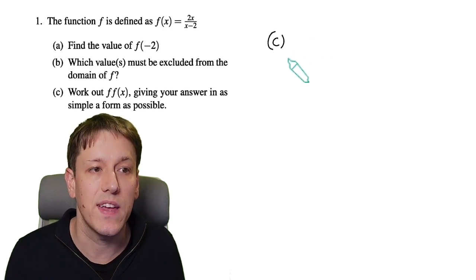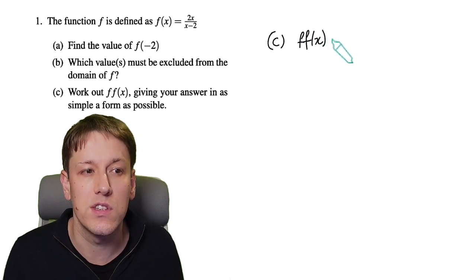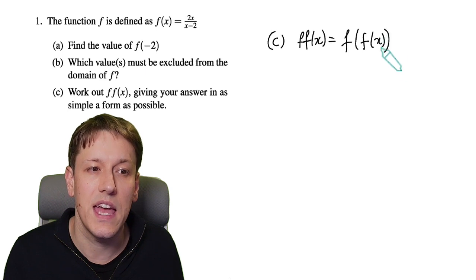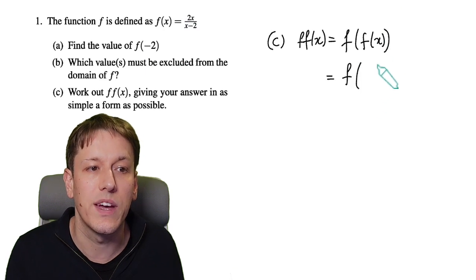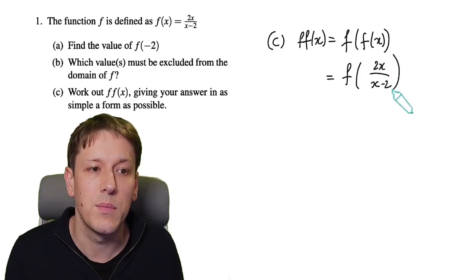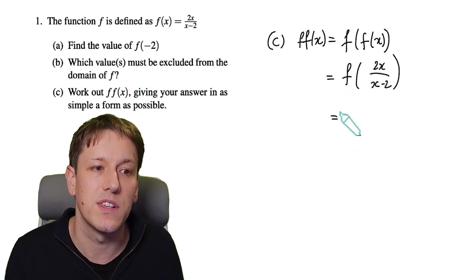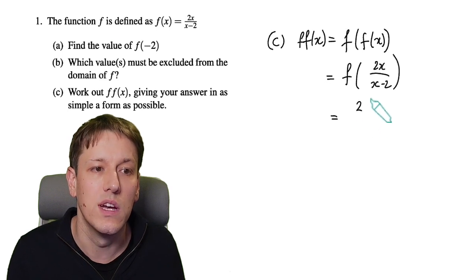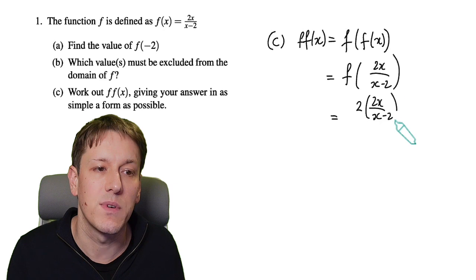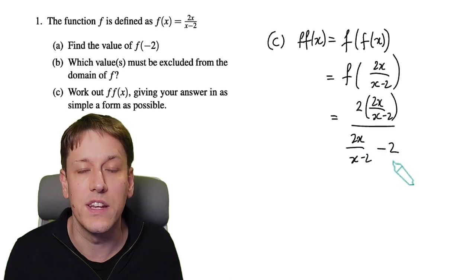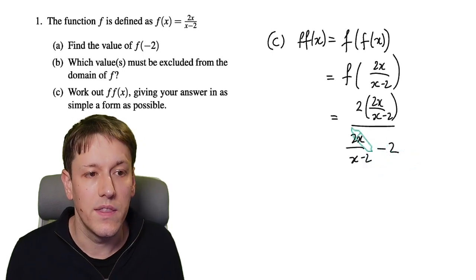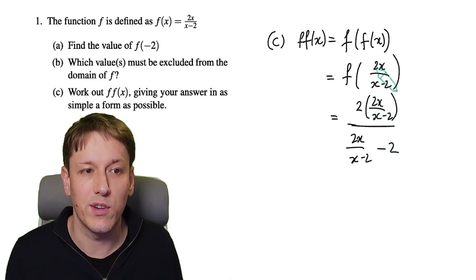In part c we want to work out f(f(x)), simplifying our answer as much as possible. f(f(x)) is a composition of functions — that means do f of (f(x)). So I'm taking the whole of f(x), which is 2x / (x - 2), and putting that as the input to this function. I'm going to replace x with 2x/(x-2) everywhere, giving 2 × (2x/(x-2)) divided by (2x/(x-2)) - 2. These expressions are very awkward when there are fractions inside fractions.